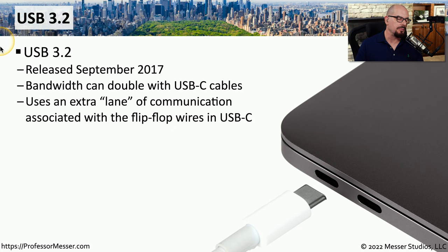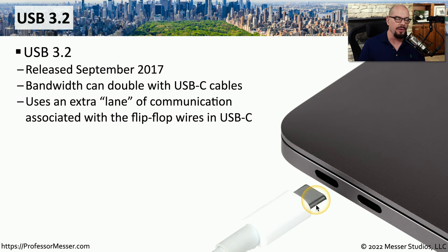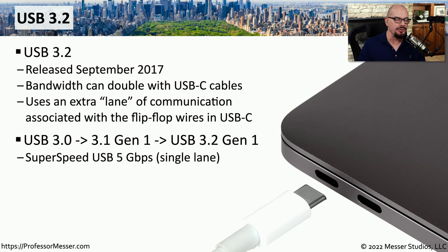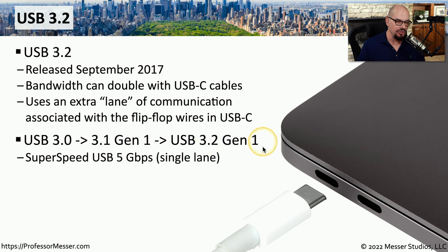A new version of USB was released in September 2017: USB 3.2. This effectively doubles the bandwidth available in USB and uses USB-C connectors to provide that throughput. This standard uses an extra lane of communication inside of that USB-C cable to provide enhanced throughput. Because this is a new standard, all of the old standards were renamed. The standard that used to be USB 3.0, then USB 3.1 Gen 1, is now called USB 3.2 Gen 1, or SuperSpeed USB 5 gigabits per second — the speed hasn't changed, only the name.